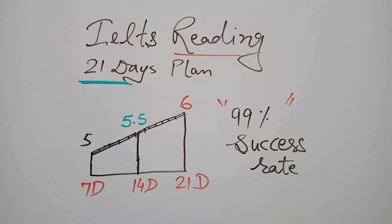This plan has been divided into 21 days: first week, second week, and third week. First week you would remain at five band, second week your performance will go up to 5.5, and by the end of the third week, during the 21 days once over, you will be comfortably at six level.